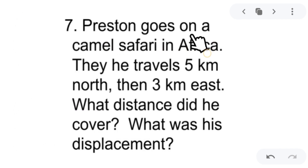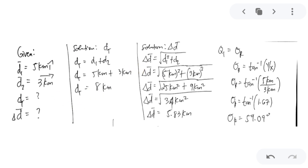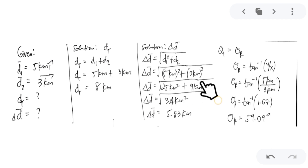Another problem: Preston travels 5 km north, then 3 km east. What distance did he cover and what was his displacement? For total distance: 5 km plus 3 km equals 8 km. For displacement (perpendicular), using Pythagorean theorem: square root of (5 km)² + (3 km)² = square root of 25 + 9 = square root of 34 = 5.83 km.